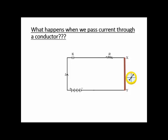Now, suppose I change the terminal of the battery and reverse the direction of the current. The current will now flow the other way. If you reverse the direction of the current — meaning the current is now flowing from north to south — then the needle will flick towards east. This is just a general thumb rule or shortcut formula.